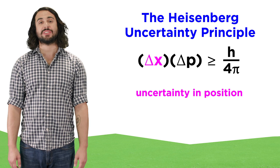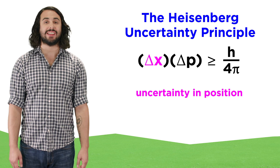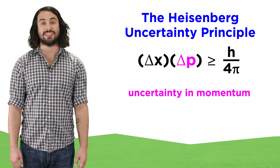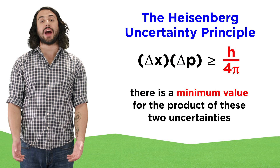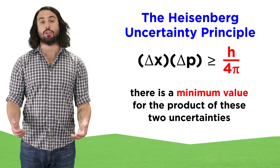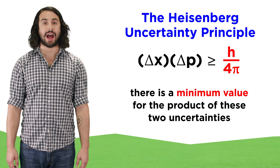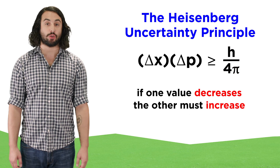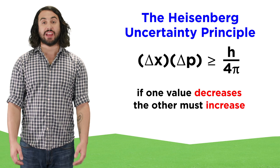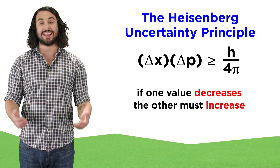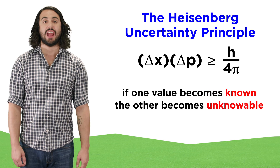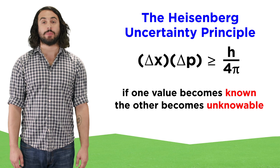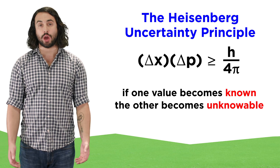Here delta X represents the uncertainty in position, while delta P is the uncertainty in momentum, and their product must be greater than H over four pi. If the uncertainty in one parameter decreases, the uncertainty in the other must increase, and if one becomes known with total certainty, the other becomes unknowable.